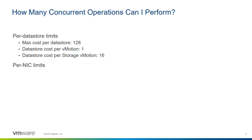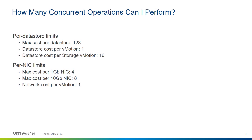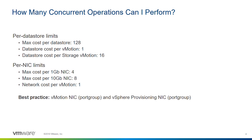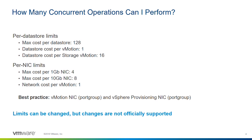There are also per-NIC limits. If you have a 1-gig NIC on your ESX host, it has up to four slots available for vMotion operations. A 10-gig NIC has twice the number — up to eight slots — and a vMotion costs one unit, so you can do up to four concurrent vMotions with a 1-gig NIC and up to eight with a 10-gig NIC. We recommend having a separate vMotion NIC, and if you have extra NICs or port groups available, we recommend creating a separate vSphere provisioning NIC so that clone and provisioning traffic travels on a different network from standard management traffic. While these limits can be changed, we don't officially support that.